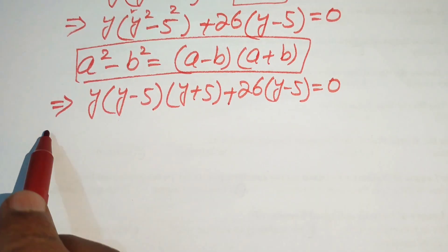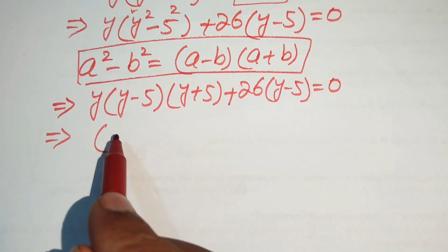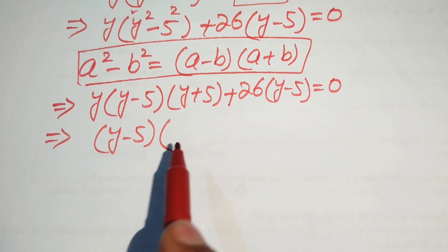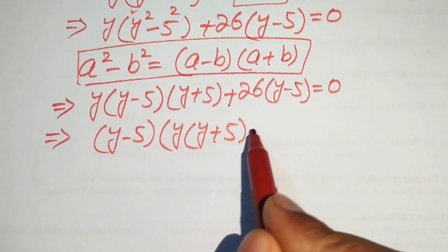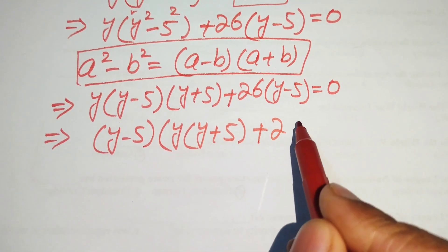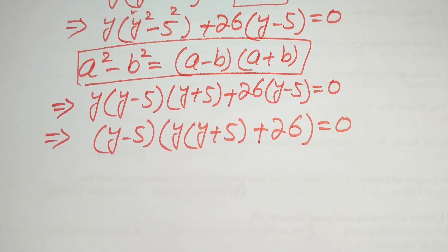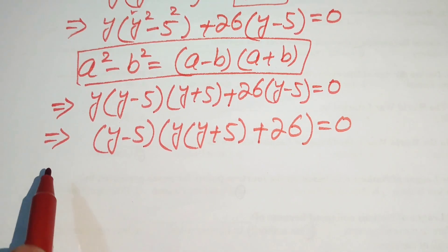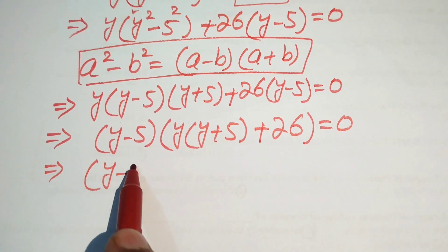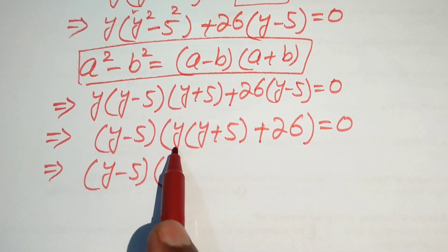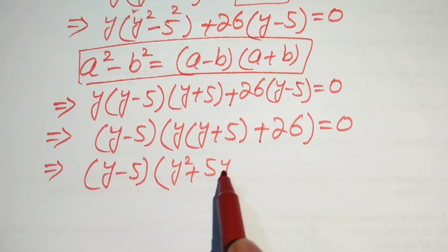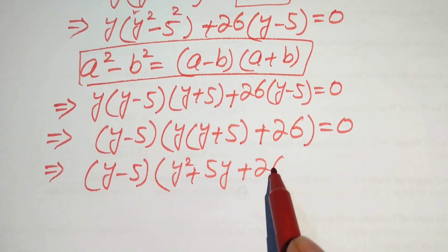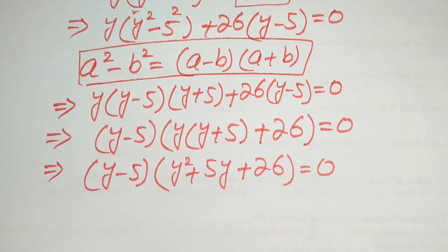We take (y minus 5) as the common factor. The remaining terms are y(y plus 5) plus 26 equals zero. Distributing y gives (y minus 5)(y squared plus 5y plus 26) equals zero.